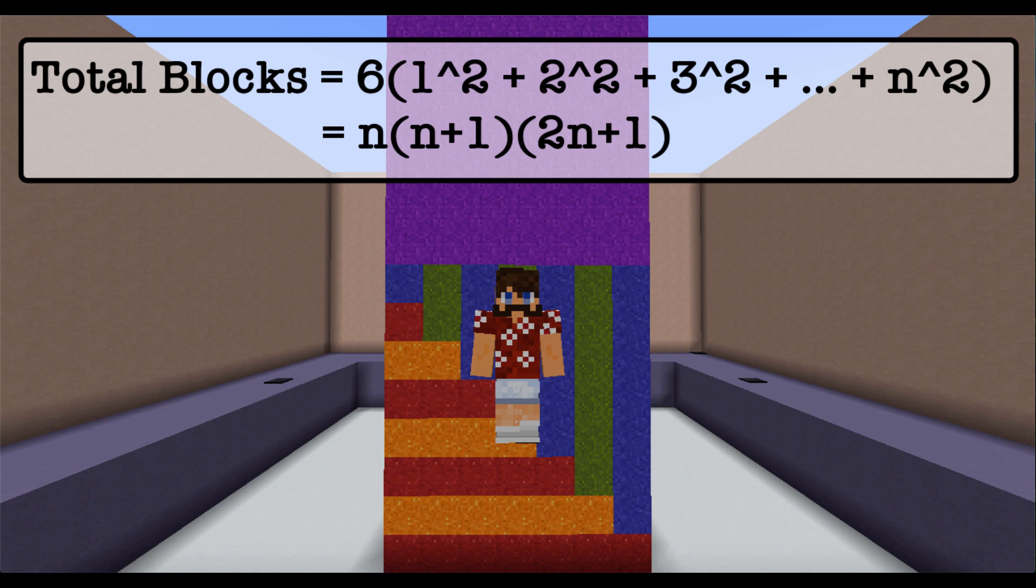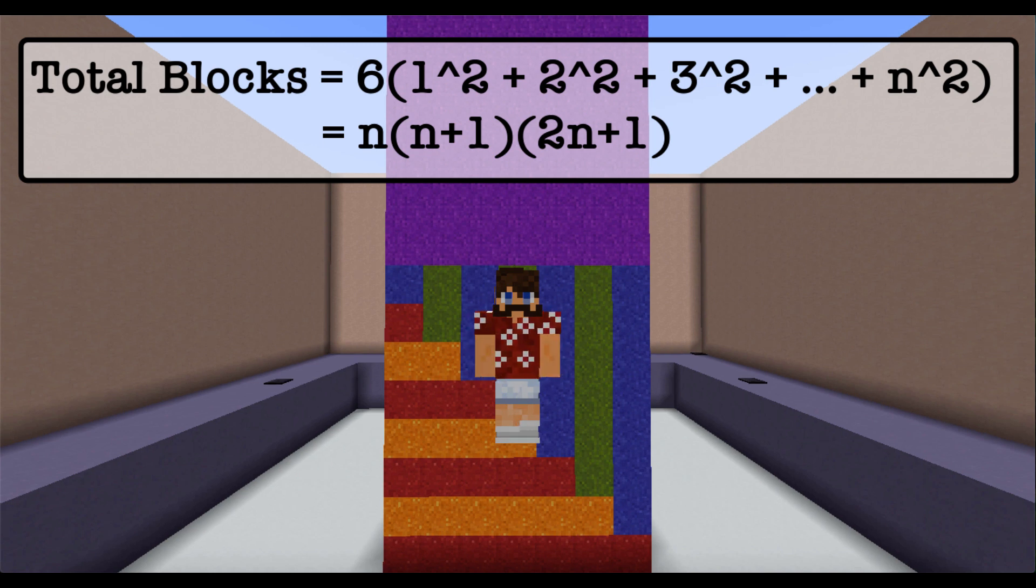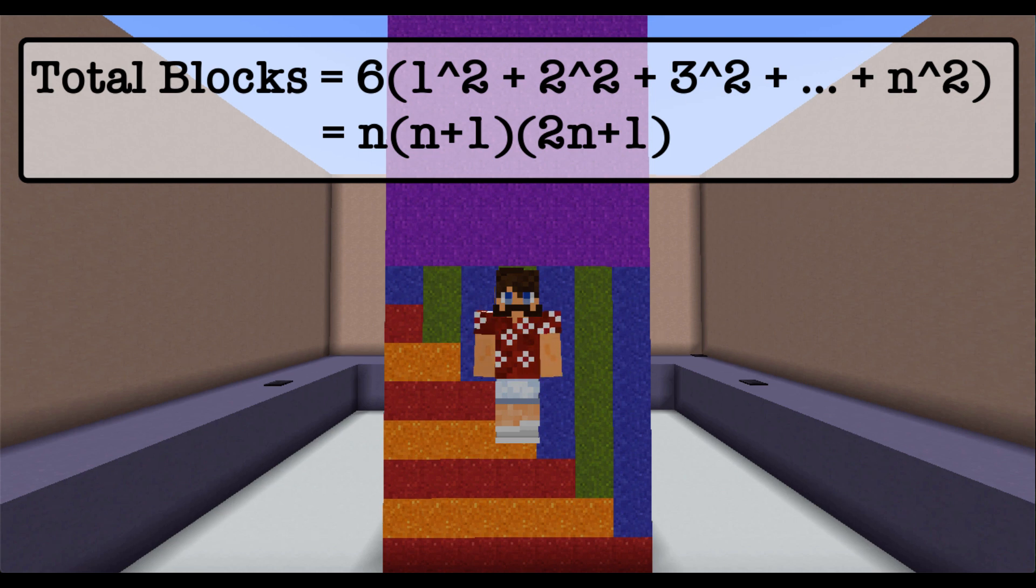So the total number of concrete blocks is both 6 times the sum of the first n squares and n times n plus 1 times 2n plus 1.